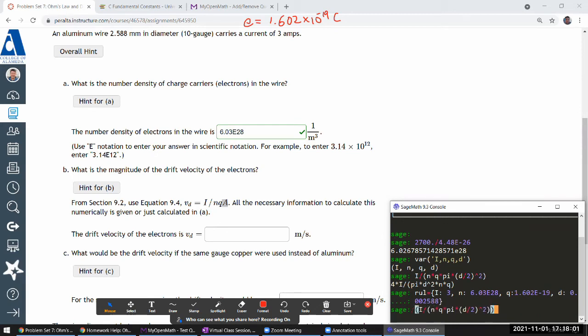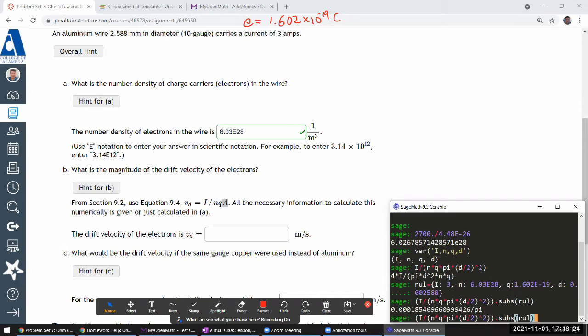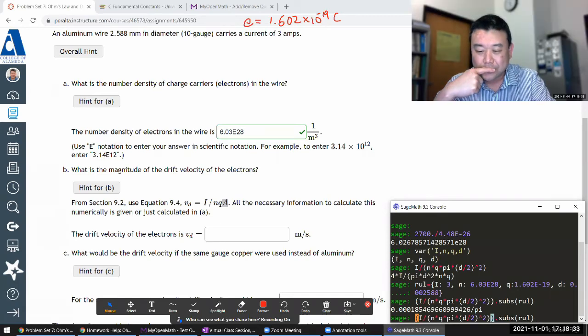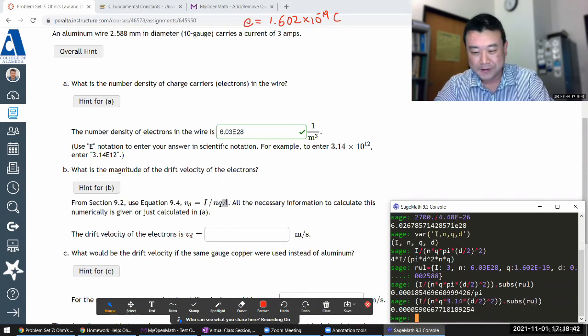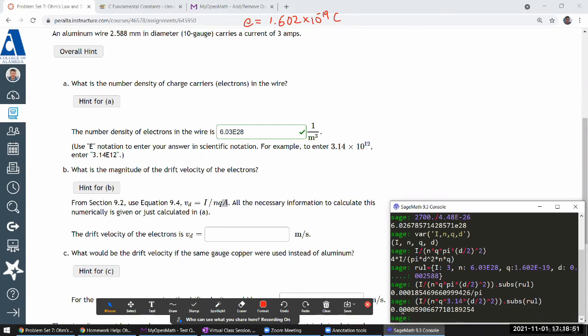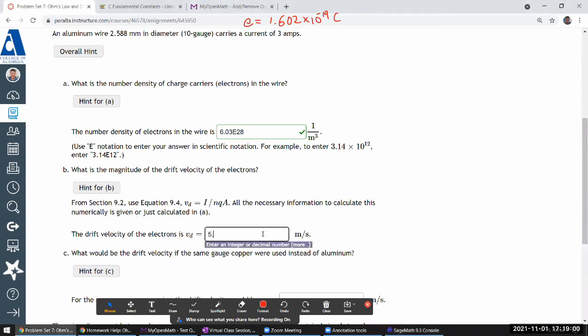What I need to do is build up a dictionary of the numbers I'm going to plug in. The current is 3 amperes, the number density is 6.03E28, Q is 1.602E-19, and the diameter should be 0.002588 meters. So this whole thing is an expression object in SageMath that has a bound method called substitute, and I can substitute in the numbers according to this dictionary. This is going to be in basic SI units, so this should be in meters per second. 5.91E-5 meters per second.